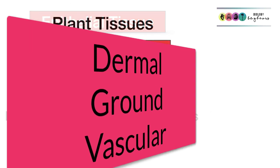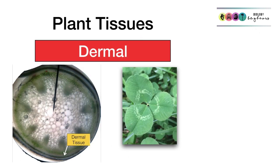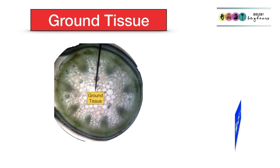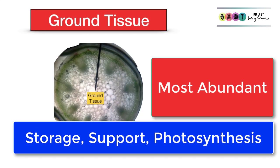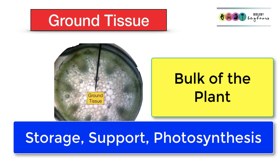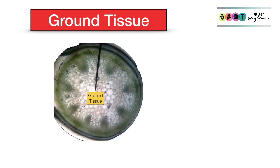Now on to plant tissues. The first is dermal tissue, which is found on the outer surfaces of all plants and has a protective role. The next type of plant tissue is ground tissue. It is the most abundant of all the plant tissues and makes up the bulk of the plant.